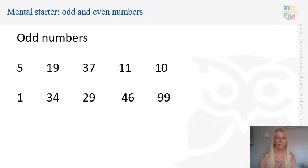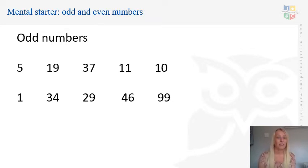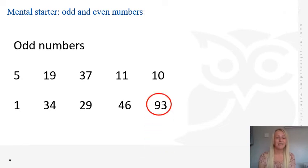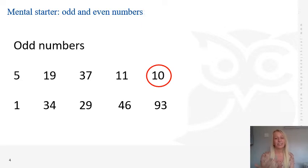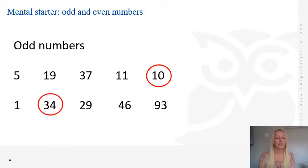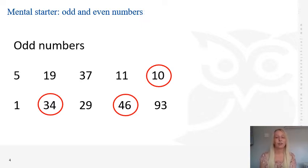Did you find them all? Let's see if you found all the even numbers hiding in our odd numbers. The first even number was 10 — because we see this when counting in twos: 2, 4, 6, 8, 10. The next number was 34, and the last one was 346. As you can see, all these numbers have a digit at the end that is even: 0, 4, and 6. Well done, Year 2 — if you got all those right, give yourself a fabulous tick.